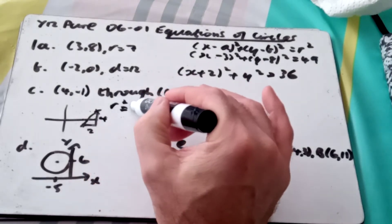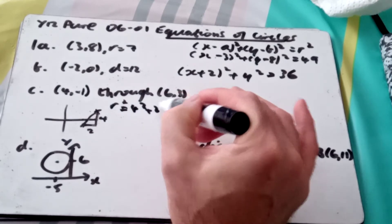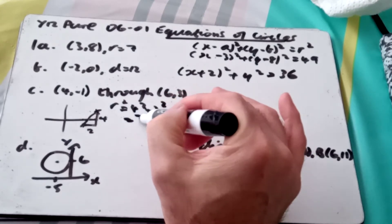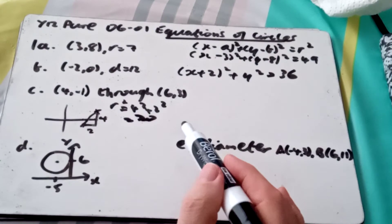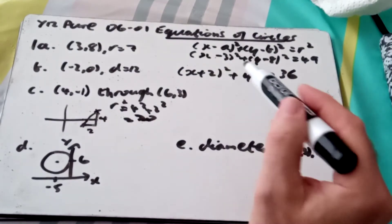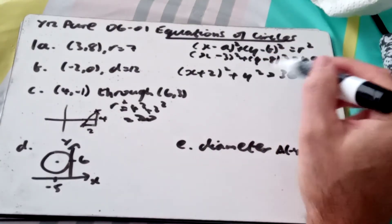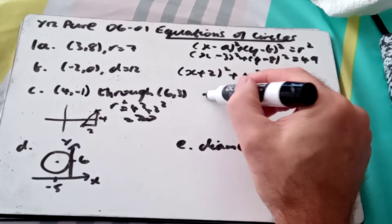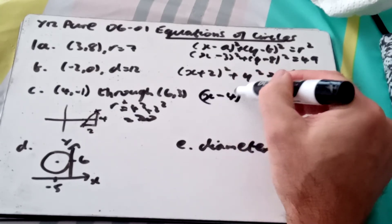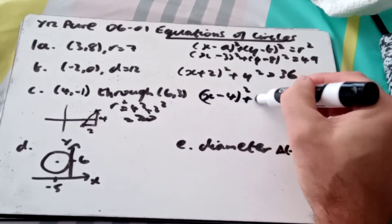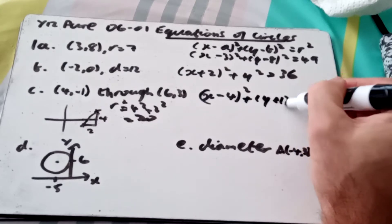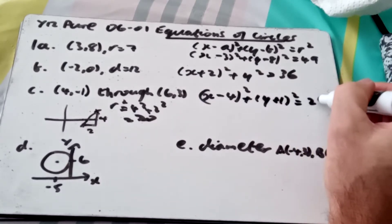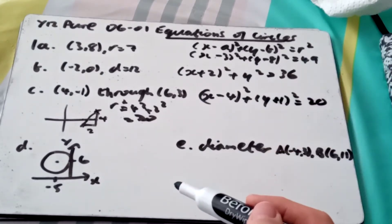So r squared will equal 4² and 2², which is 20. r is √20 or whatever it is, √4 × √5, 2√5, but we need it as r squared in the formula anyway. So I've got (x - 4)² + (y + 1)² = (√20)², which is 20.